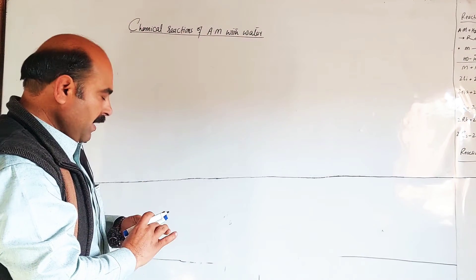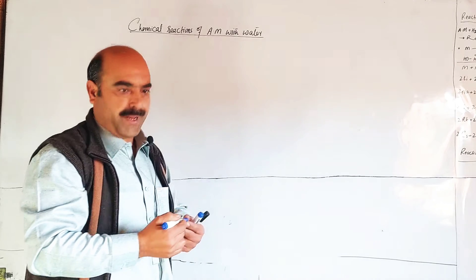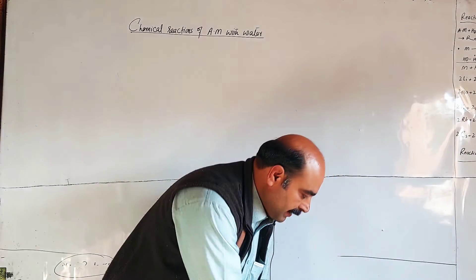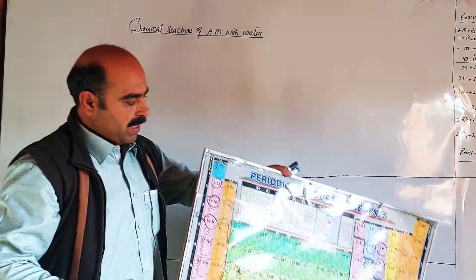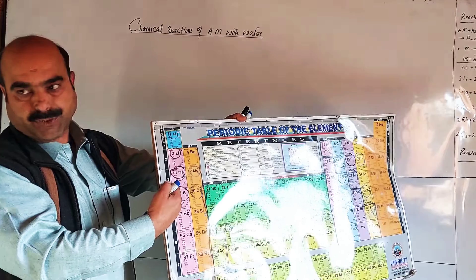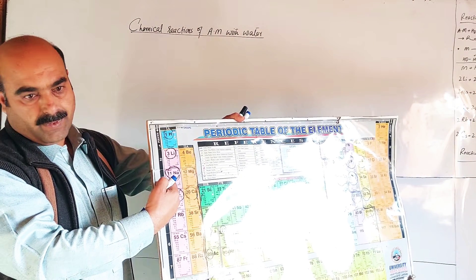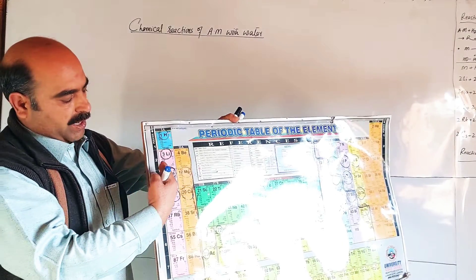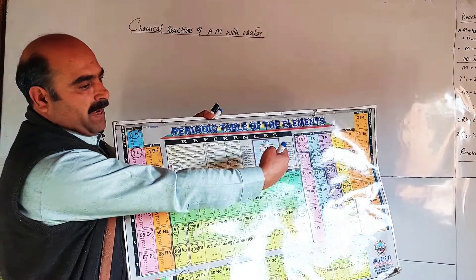Alkali metals are more reactive. The reason is that alkali metals are in the periodic table on the left extreme. We also know that atomic size decreases from left to right.